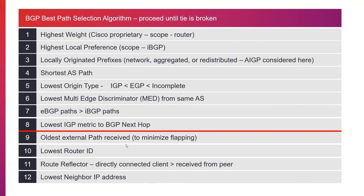If there's no oldest external path to distinguish, the next step is the lowest router ID. The router ID is usually a loopback address; if not, it's the IP interface with the highest IP address. If the multiple paths go to the same router and router ID can't break the tie, and if this is a route reflector making the decision, it will prefer directly connected clients over information received from a peer — similar to preferring EBGP over IBGP. If that still cannot break the tie, the last tiebreaker is the lowest neighbor IP address, which will always produce a winner since one address will be higher than the other.